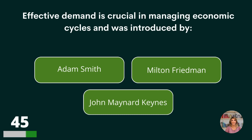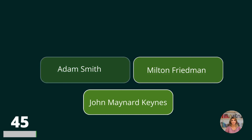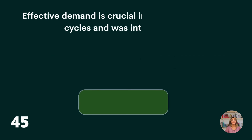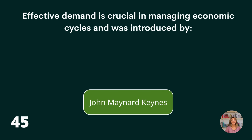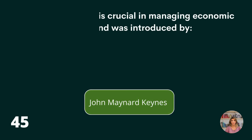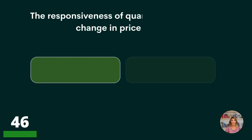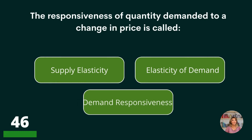Effective demand is crucial in managing economic cycles, and was produced by Adam Smith, Milton Friedman, or John Maynard Keynes? John Maynard Keynes.